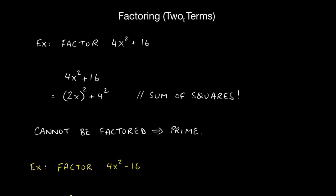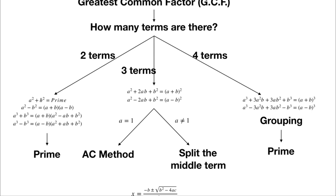Let's factor 4x² + 16. We can rewrite 4x² as (2x)² and 16 as 4². We have a square plus a square, which is a sum of squares. A sum of squares — a² + b² — is prime.